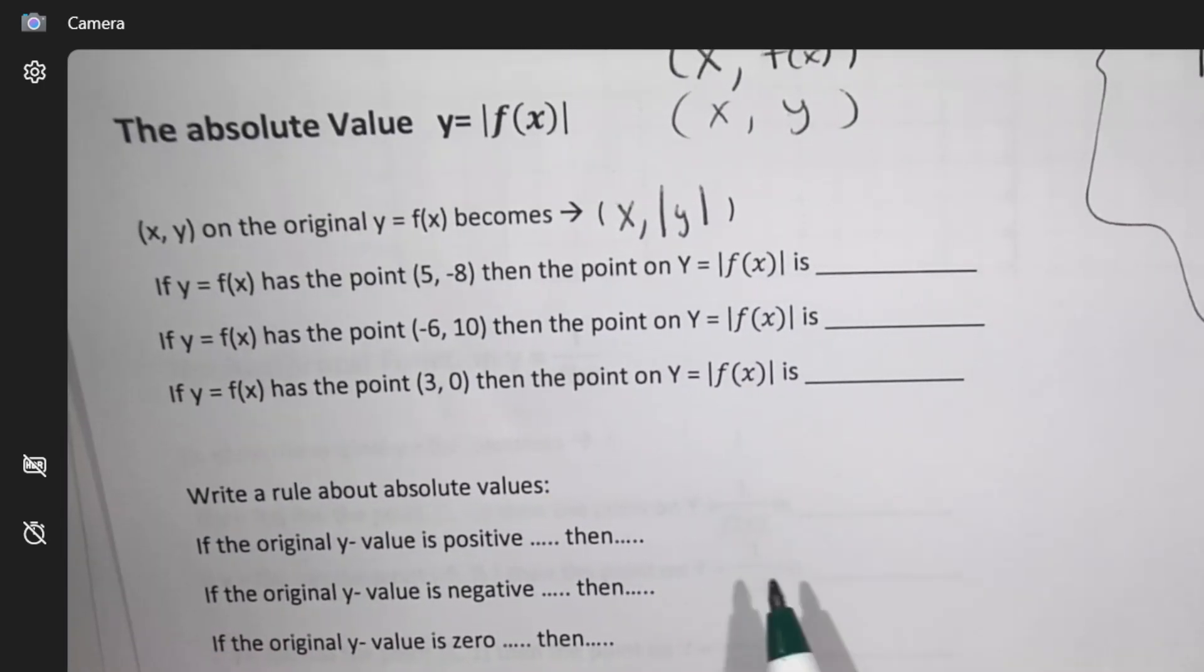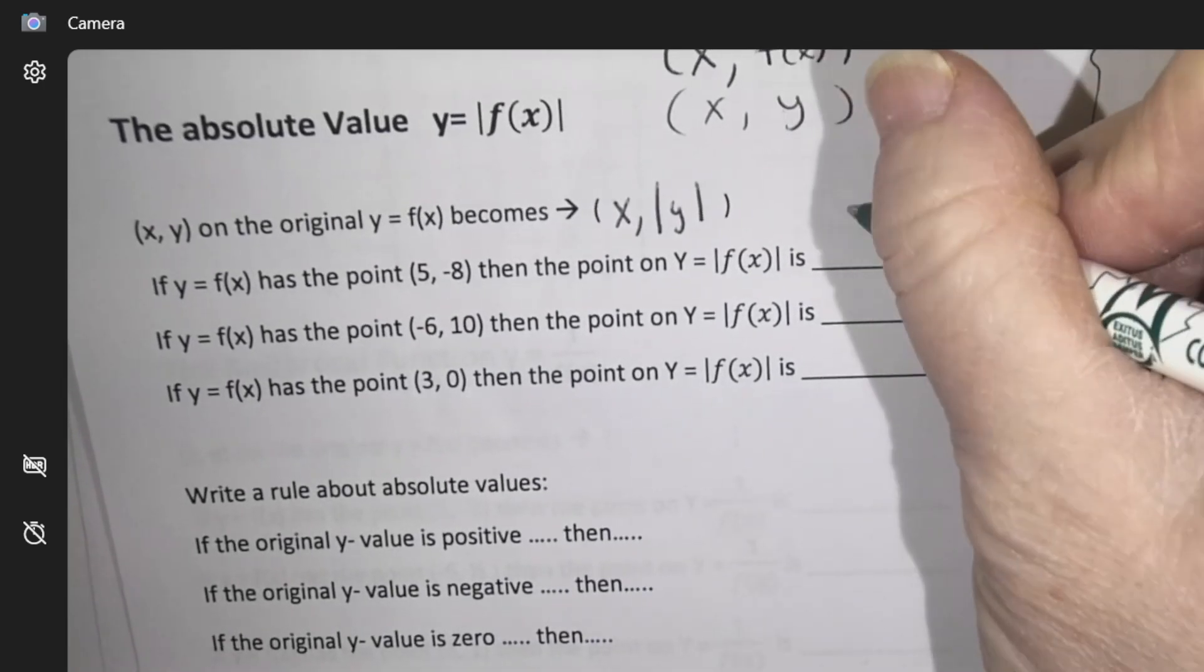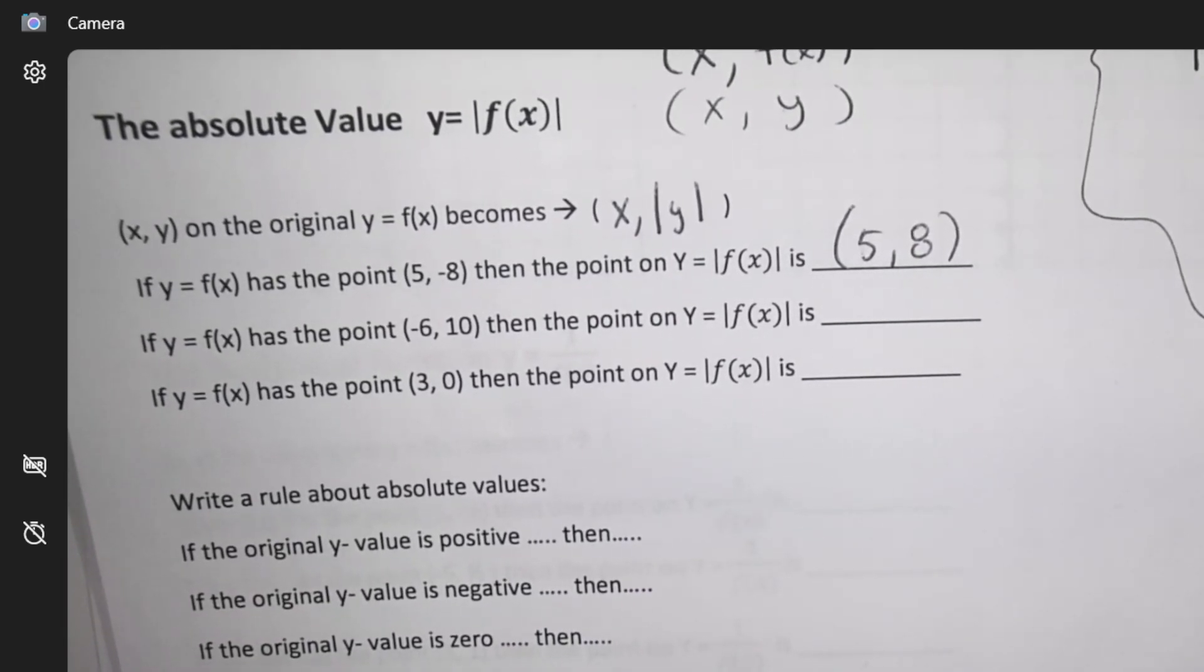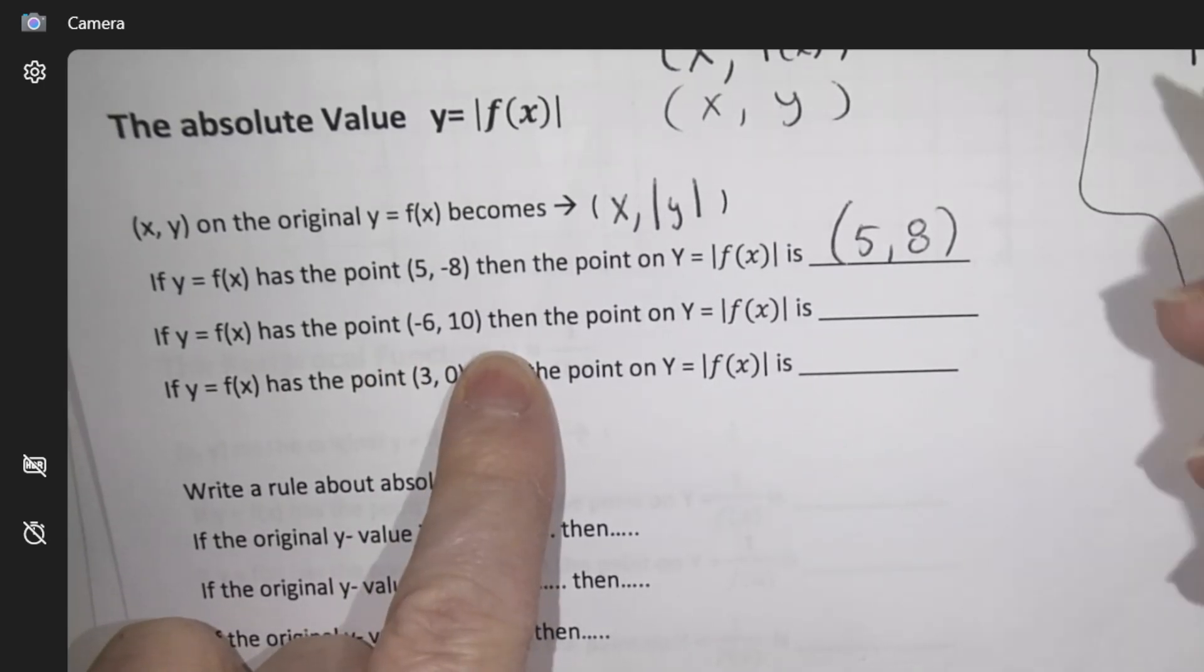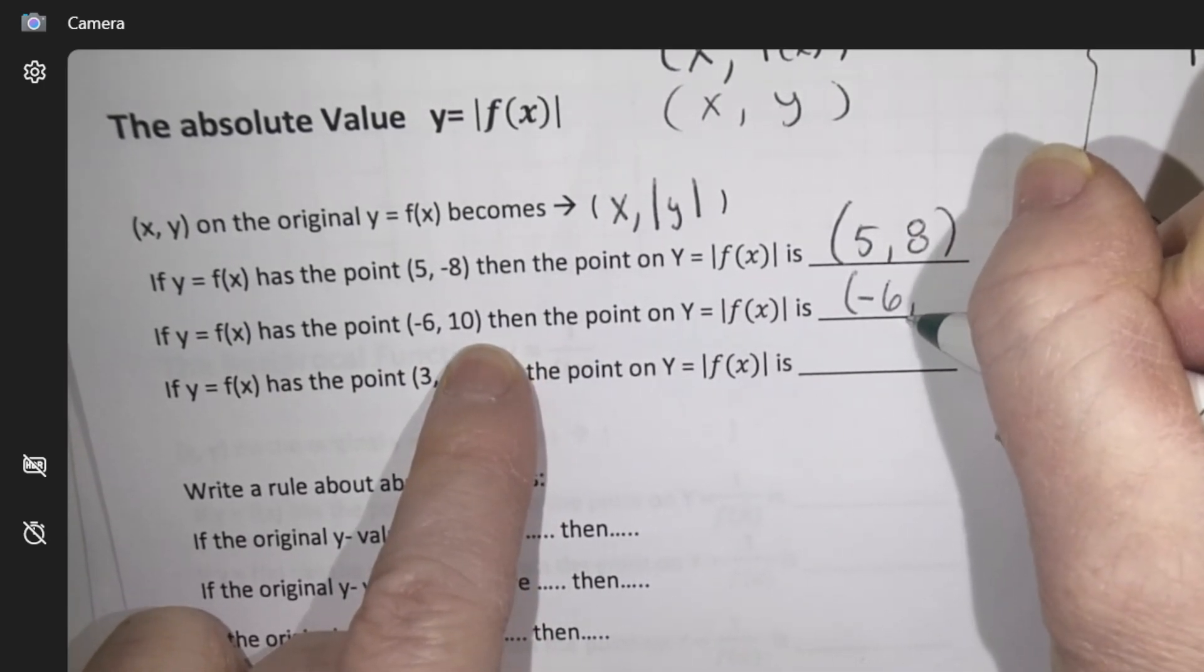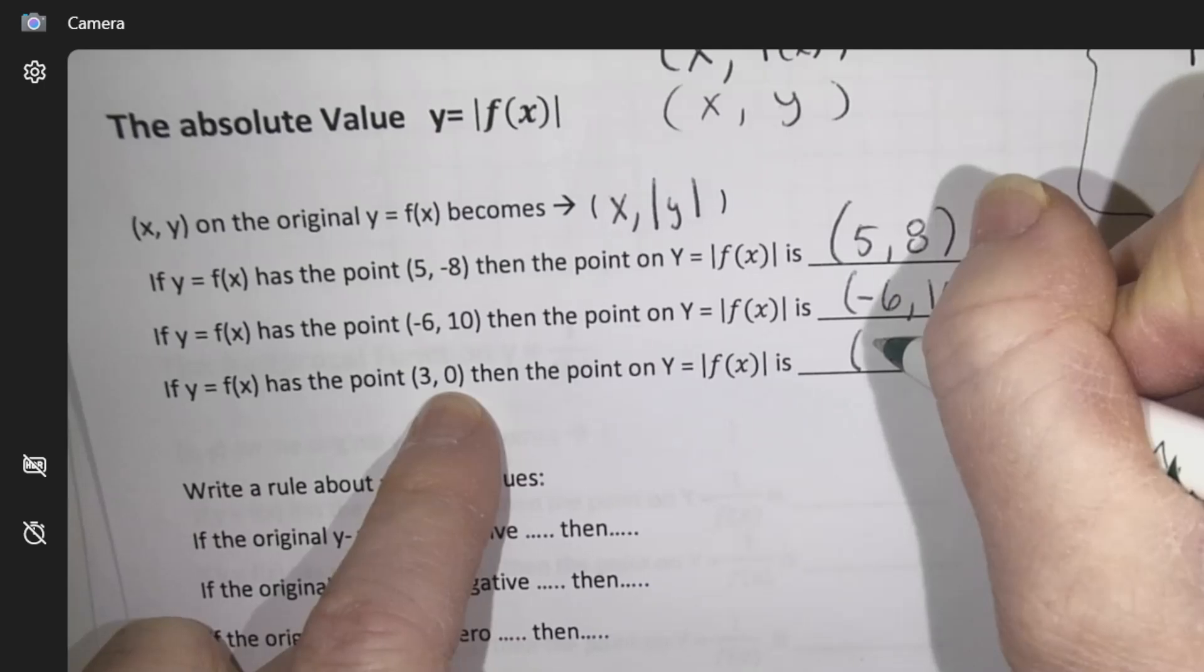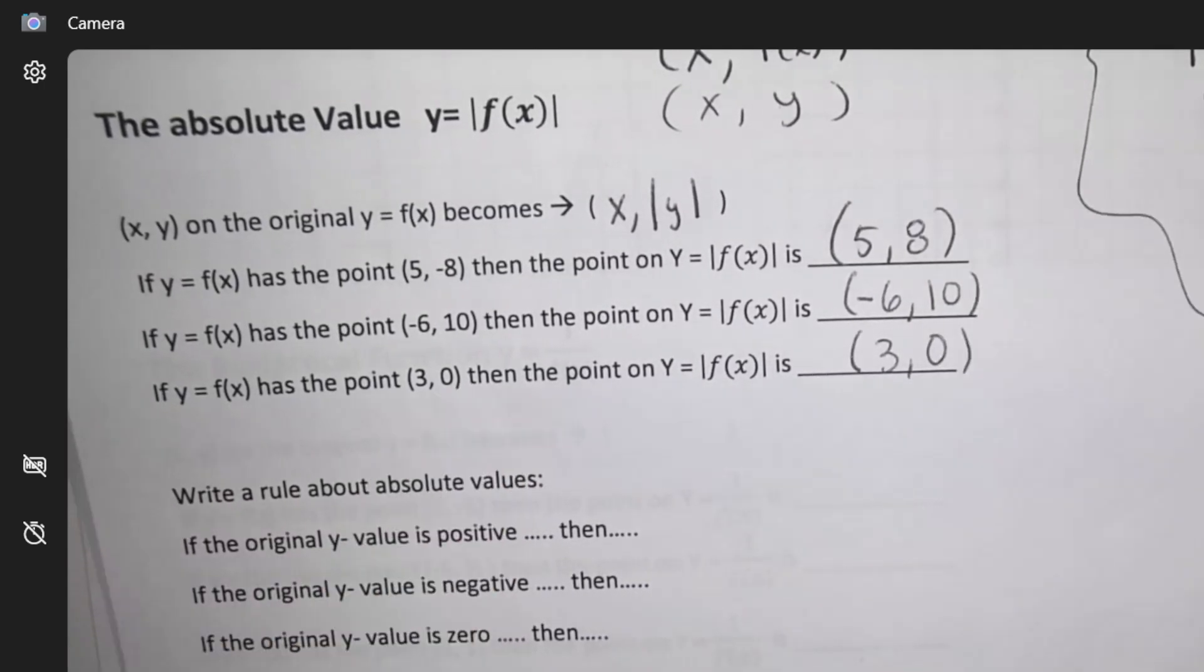So here we go. This coordinate 5, negative 8 is going to become 5, positive 8, because I can't do negative numbers. Negative 6, 10 is going to be negative 6, and then I think what should I do with 10? Leave it. 3, 0 is going to become 3, what should I do with the y? Leave it.